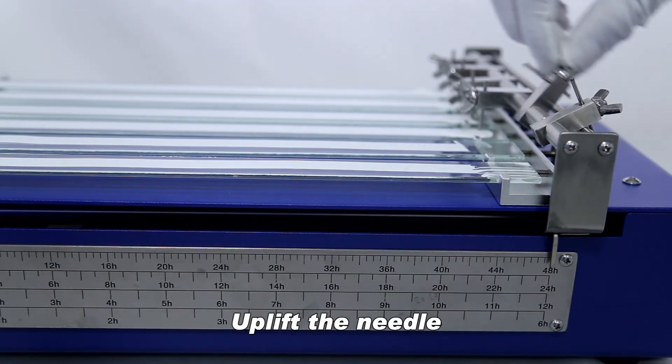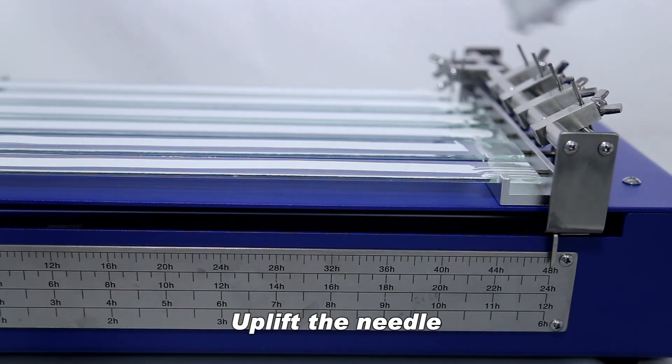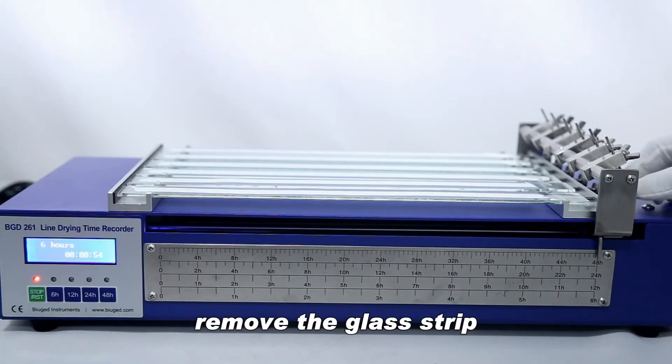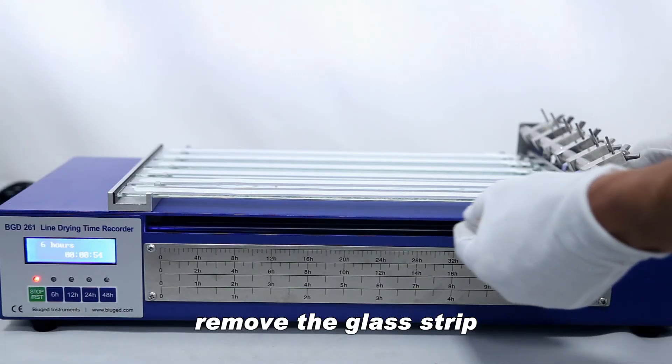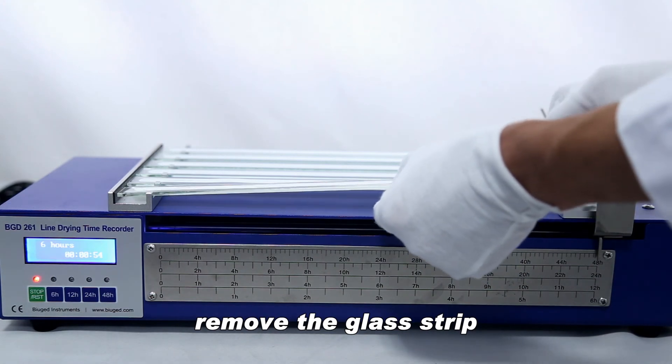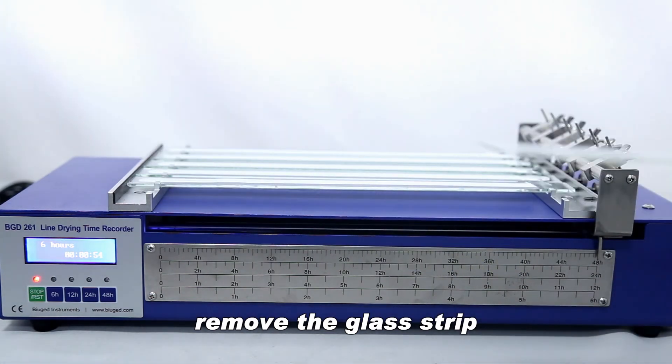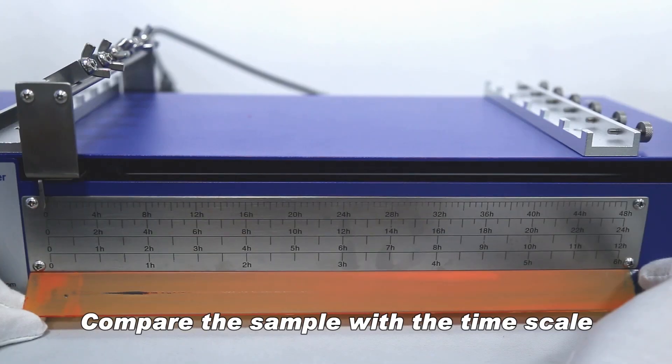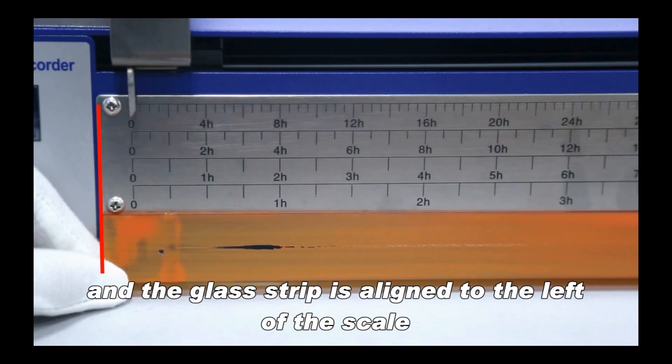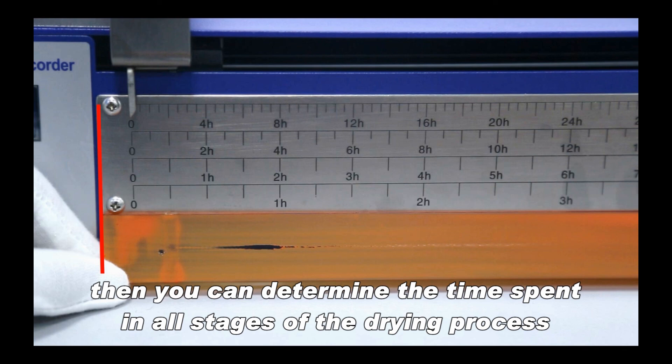Uplift the needle. Remove the glass strip. Compare the sample with the time scale and align the glass strip to the left of the scale. Then you can determine the time spent in all stages of the drying process.